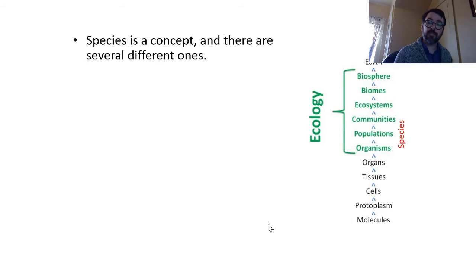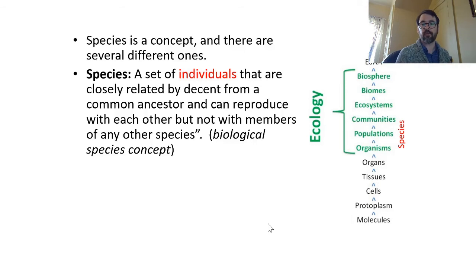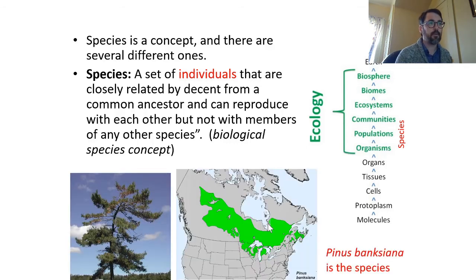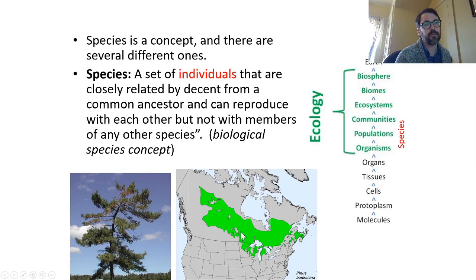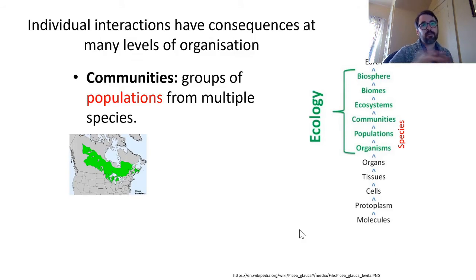You might wonder where species fit into this hierarchy. Species sit to the side because 'species' is a concept with several different definitions. For this class, we'll use the biological species concept: a set of individuals closely related by descent from a common ancestor that can reproduce with each other but not with members of another species. The key is this ability to interbreed successfully.